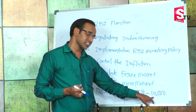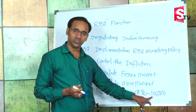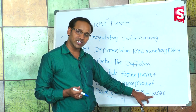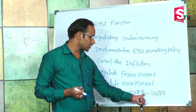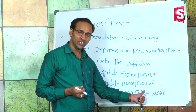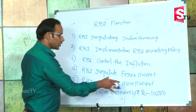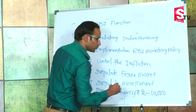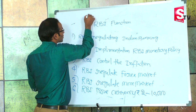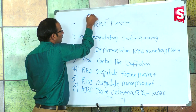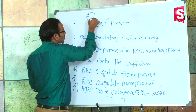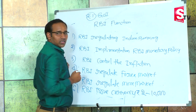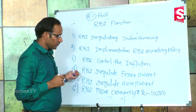The first 10,000 rupee currency note was released in 1938. In 1954, Jawaharlal Nehru released the 10,000 rupee currency note again. The RBI prints notes from a minimum of 2 rupees to a maximum of 10,000 rupees. However, the 1 rupee currency note is printed by the Government of India.